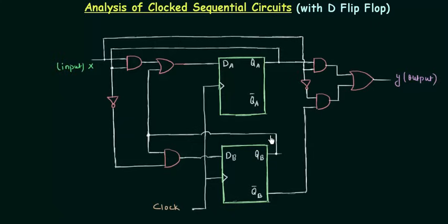Without wasting any time, let's move to this circuit. In this you can see the input is X, the output is Y, and two D flip-flops are used. Gates are also used as our combinational logic — the input combinational logic and the output combinational logic.